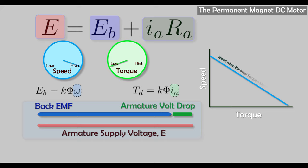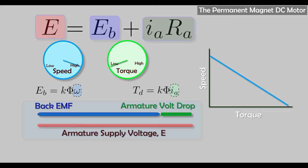Looking at this curve, we note that speed drops as torque increases. For higher torques, meaning higher armature currents, the motor spins slower — this makes sense because as torque increases, current must increase too, meaning more power is wasted in the armature. But the natural regulation curve of a DC motor is actually pretty good: you get a nice constant speed over a wide range of torques.